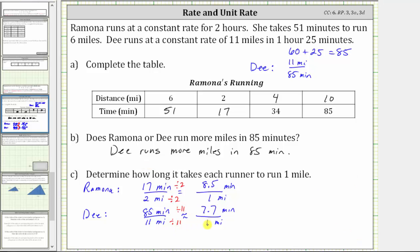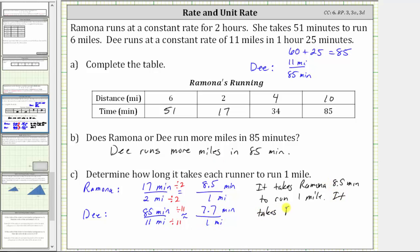Writing the answer as complete sentences: it takes Ramona 8.5 minutes to run one mile. It takes D approximately 7.7 minutes to run one mile. I hope you found this helpful.